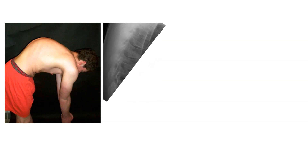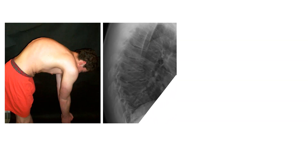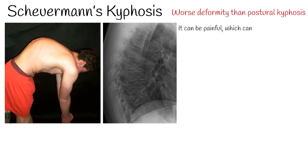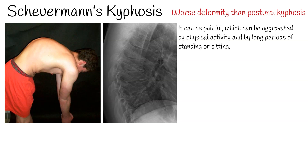Another common type is Scheuermann's kyphosis. It is found mostly in teenagers and presents a significantly worse deformity than postural kyphosis. It can be painful, which can be aggravated by physical activity and by long periods of standing or sitting.